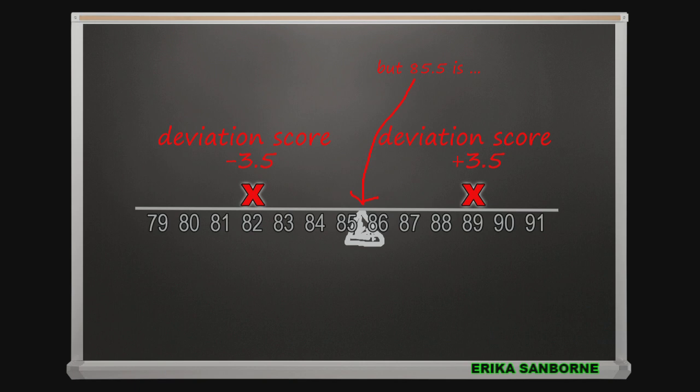Every time I put another grade into the data set, the mean will shift to keep the balance. The deviation scores cancel out around the mean. Of course, if I add a score that equals the mean at that moment, the mean won't move.